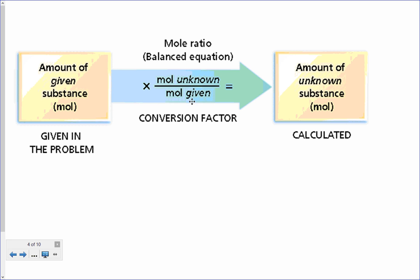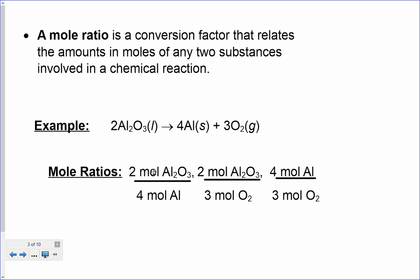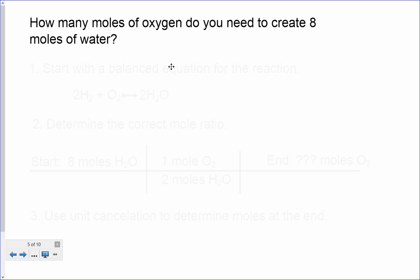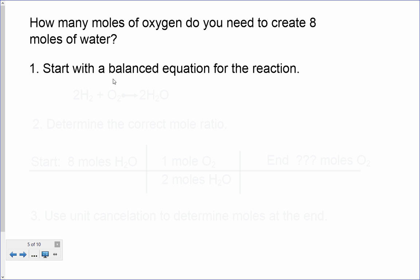This creates a little fraction, just like the fractions we had — the two to four to three to two. For the first example, we have a simple problem: how many moles of oxygen do you need to create eight moles of water? The first thing we have to do is start with a balanced equation for the reaction. We have two moles of hydrogen gas plus one mole of oxygen, which creates two moles of water.